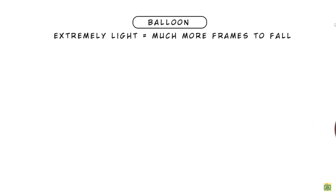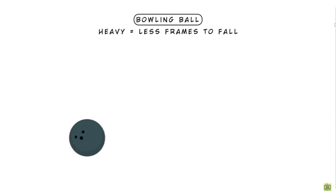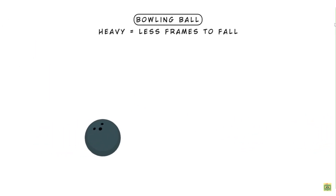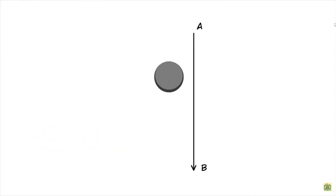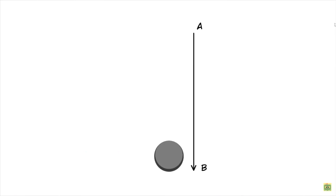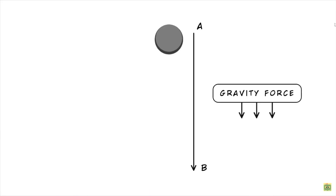If the ball is heavier, like a bowling ball, it would have a very fast timing because of the weight, and would have very few, short bounces. So let's decide our timing. The ball falls from point A to point B. Let's say it takes 10 frames to fall on the ground. This movement is generated by the gravity that pushes the ball down.